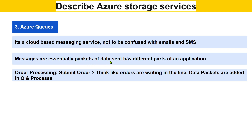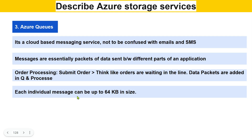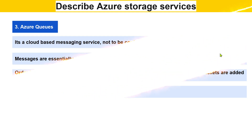Each individual message in Azure Queues can be up to 64 KB in size. The data can be divided into multiple packets, each up to 64 KB.